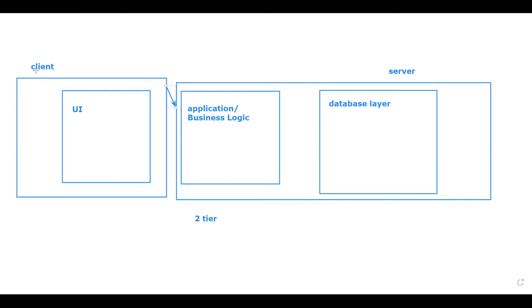The client makes a request, and the server gives the response — request and response. This terminology is introduced in two-tier architecture. When the client is requesting, the data is in the server's database. You don't want to see the complete database; you want your filters applied, business logic to process it, calculate it, and then display what you want to see.